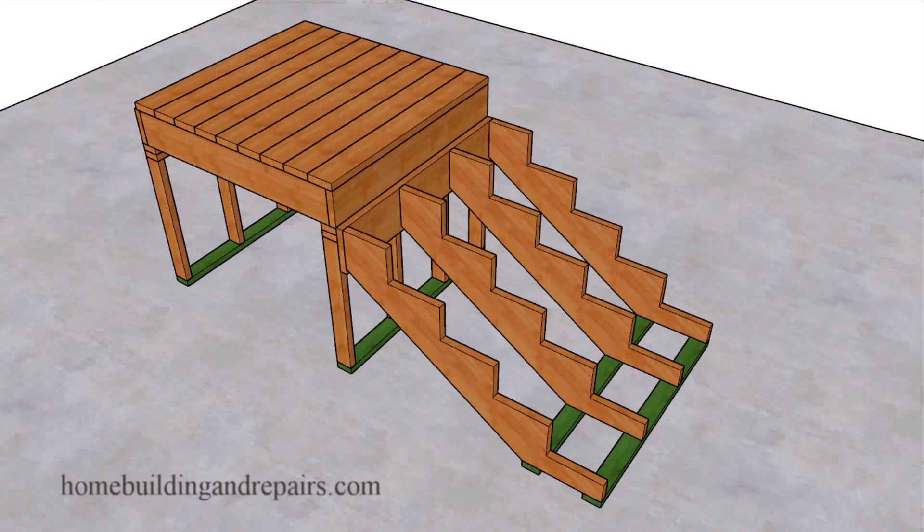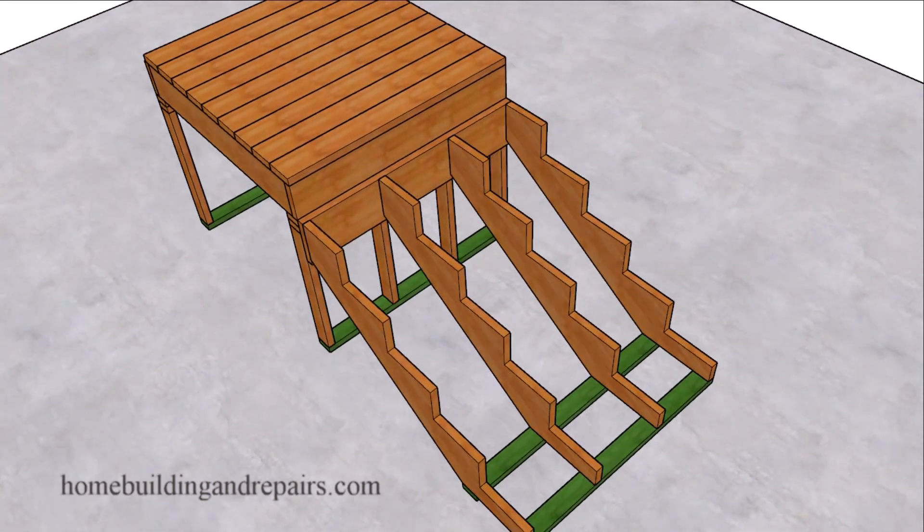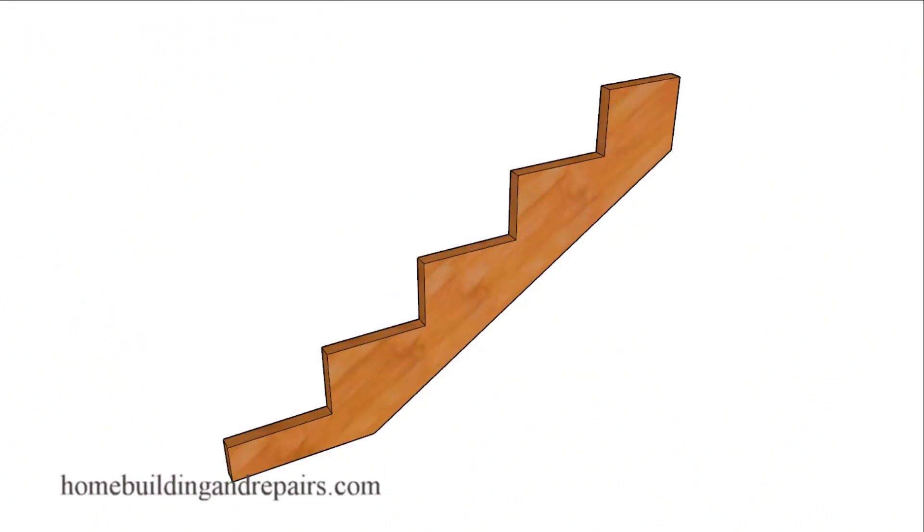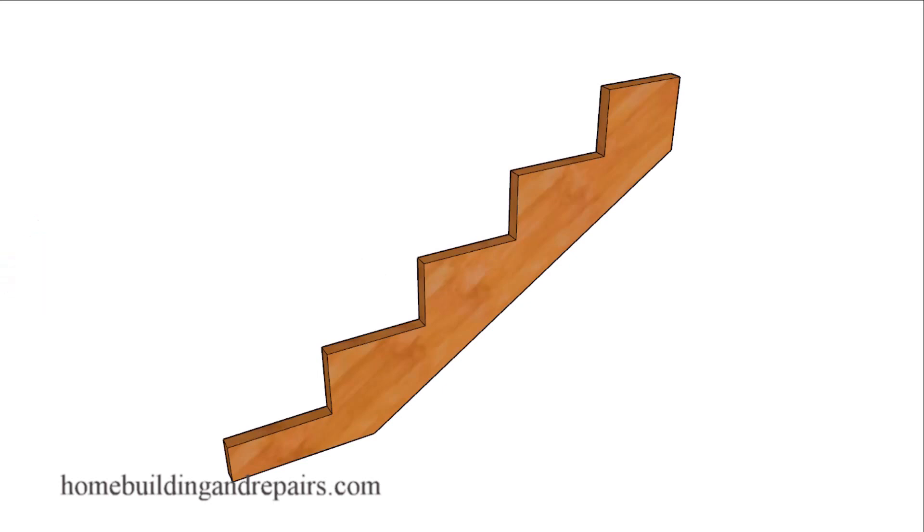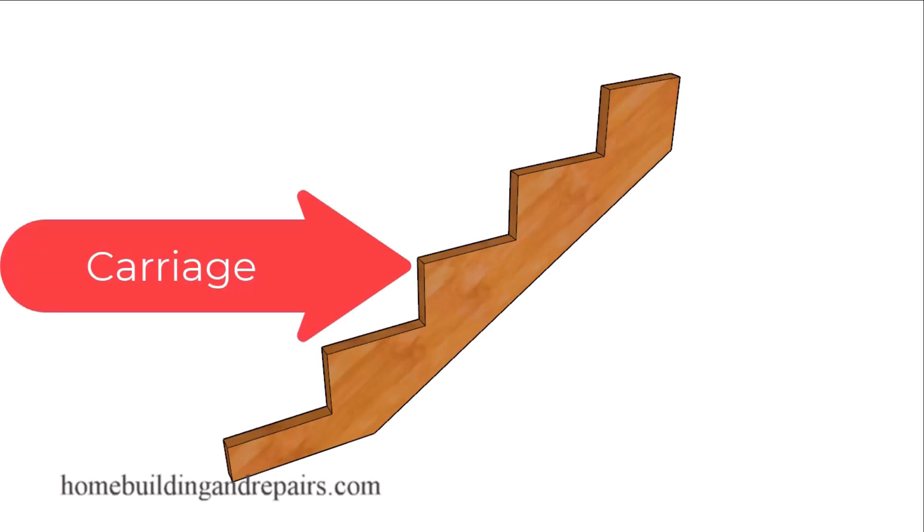And these are a couple of them. If you are building a set of stairs or talking to an architect or engineer over the phone, and they use the term carriage or horse in a sentence that might sound something like this: we are going to need to use two by twelve for our stair horses, or this set of stairs will require four stair carriages.